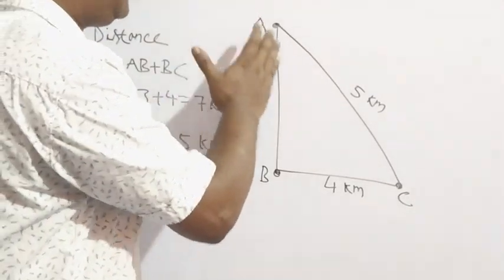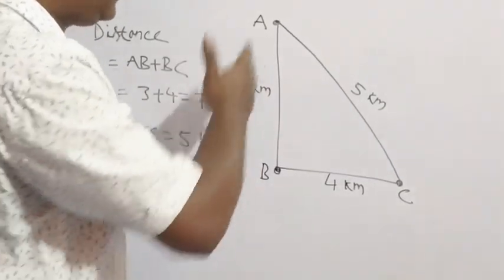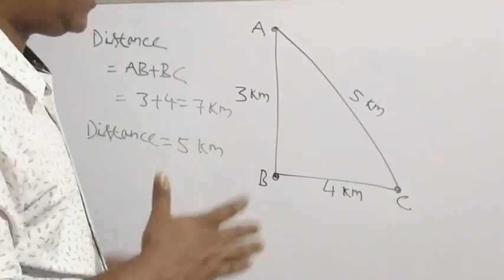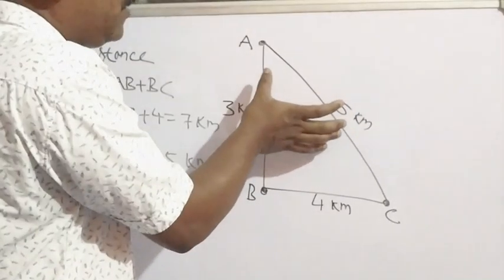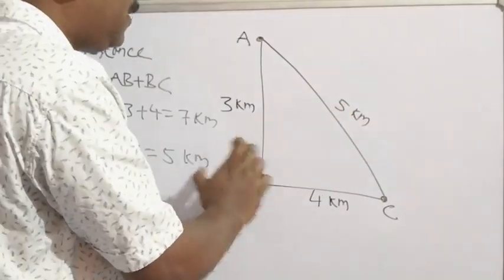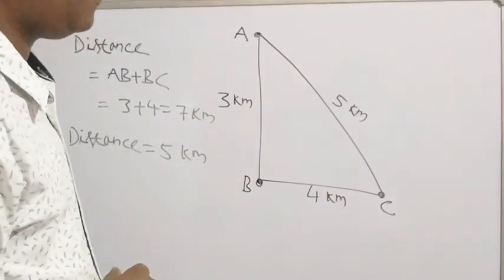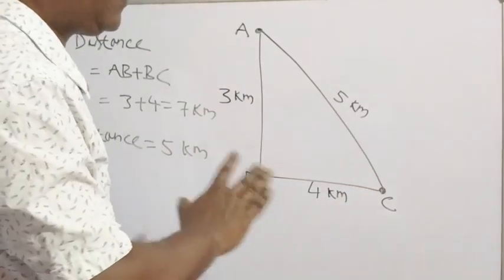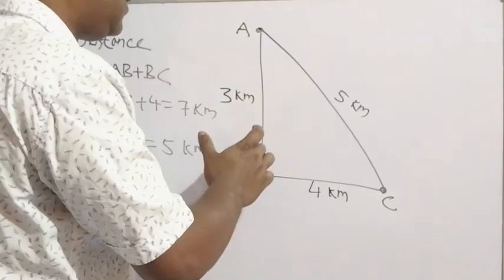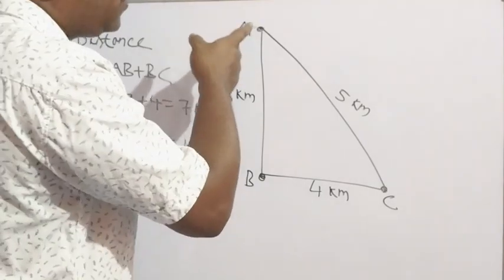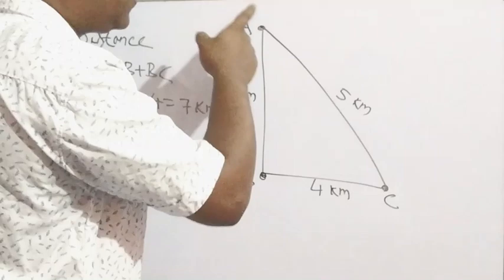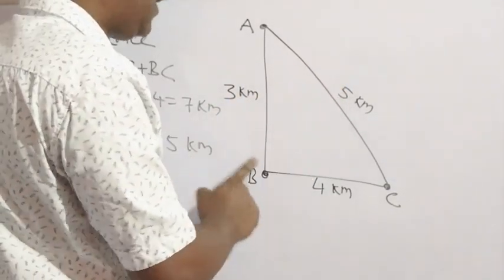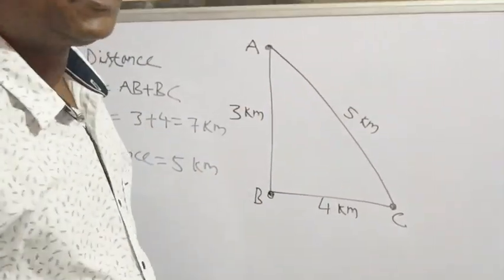The actual displacement of the person from the initial to final position is 5 km. But through the path, the total path covered to reach position C is 7 km. The net displacement of the person is 5 km — that is called displacement. The 3 plus 4 equals 7 km is the distance covered. The shortest possible straight-line distance between the initial and final point in a particular direction — from A to C — is 5 km, which is the displacement.